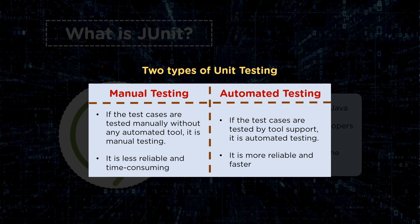Automated testing, on the other hand, is quite reliable because it does not depend on human effort — it can be run 24/7. That's why automated test cases are much faster compared to manual testing. JUnit automated test cases really help developers and QA professionals to test source code much faster than manual testing.